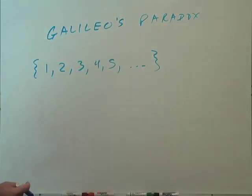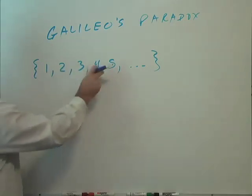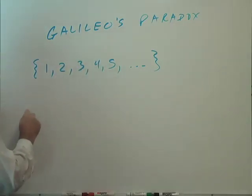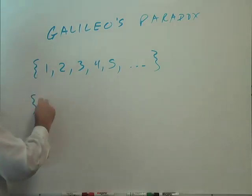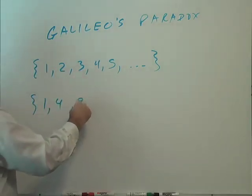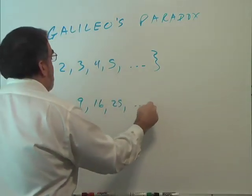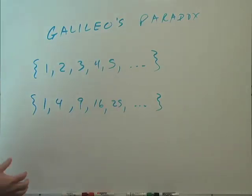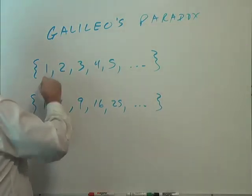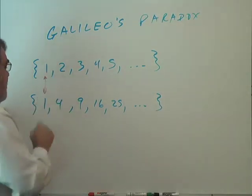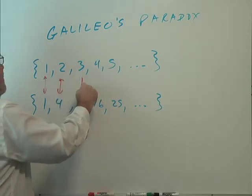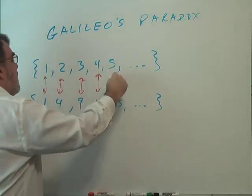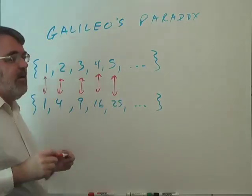Galileo said, well, you know, if you square each of these numbers, let's form a set: one squared is one, two squared is four, three squared is nine, and so forth. So if we square these numbers, we can form a different set. And look at this, the number one matches up with one, two matches up with four, three matches up with nine, and so on. We call this a one-to-one correspondence.